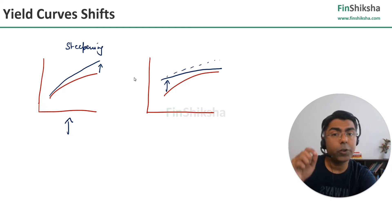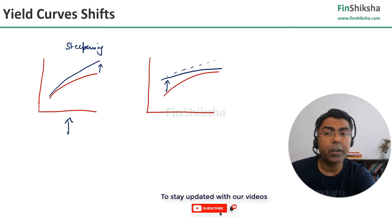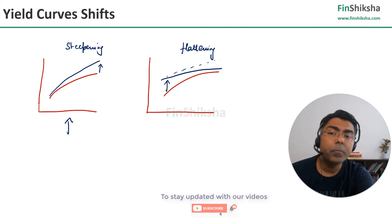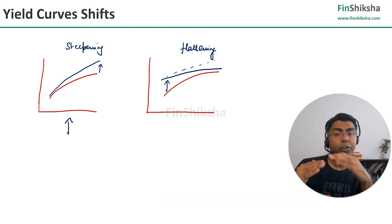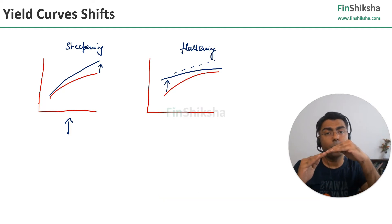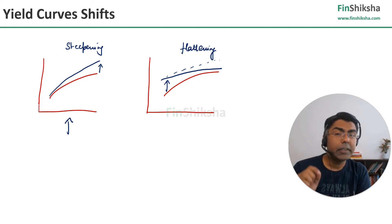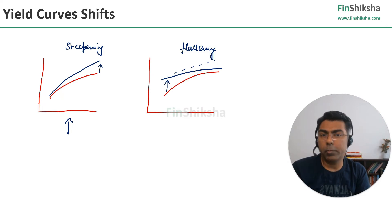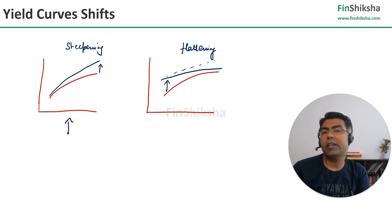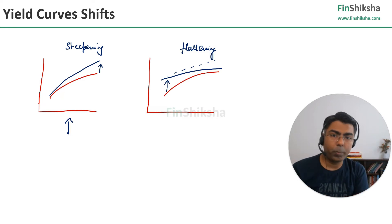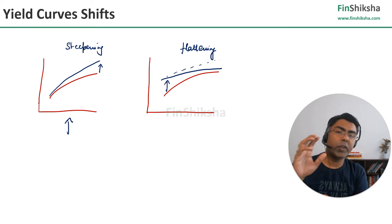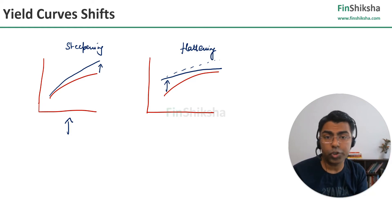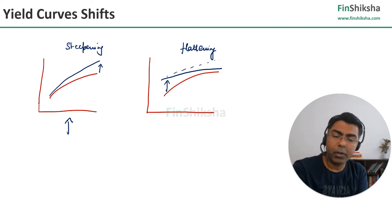Curve flattening — where the 2-year yield has moved up but the 10-year yield has not — usually signifies that your yield curve, which was upward sloping, has now become flatter. This signifies that growth in the future could come down, which could be a little problematic for asset classes like equities. It doesn't necessarily have to behave that way, but usually when bond markets are predicting something like this, there is an expectation of a slowdown in the near future. Markets can obviously take it multiple ways.